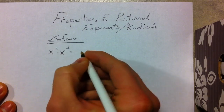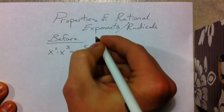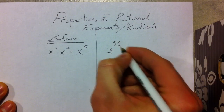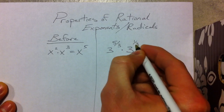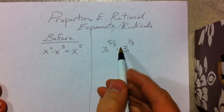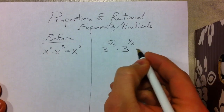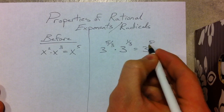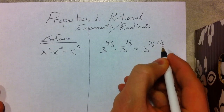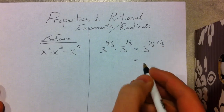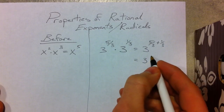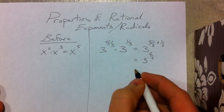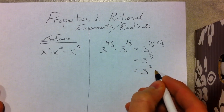We had 2 x's and 3 x's, so that made 5 x's. Now we're going to do that with fractional exponents. If we have 3 to the 5 thirds times 3 to the 1 third — same base — we add the exponents: 5 thirds plus 1 third. With common denominators, that's 6 over 3, so we get 3 to the second, which is 9.